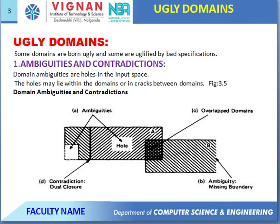Ugly Domains: these are domains with bad specification. First type: Ambiguities and Contradictions. Among ambiguities are holes in the input space. A missing boundary creates holes — this is called ambiguity. The association of two overlapping regions represents a contradiction.